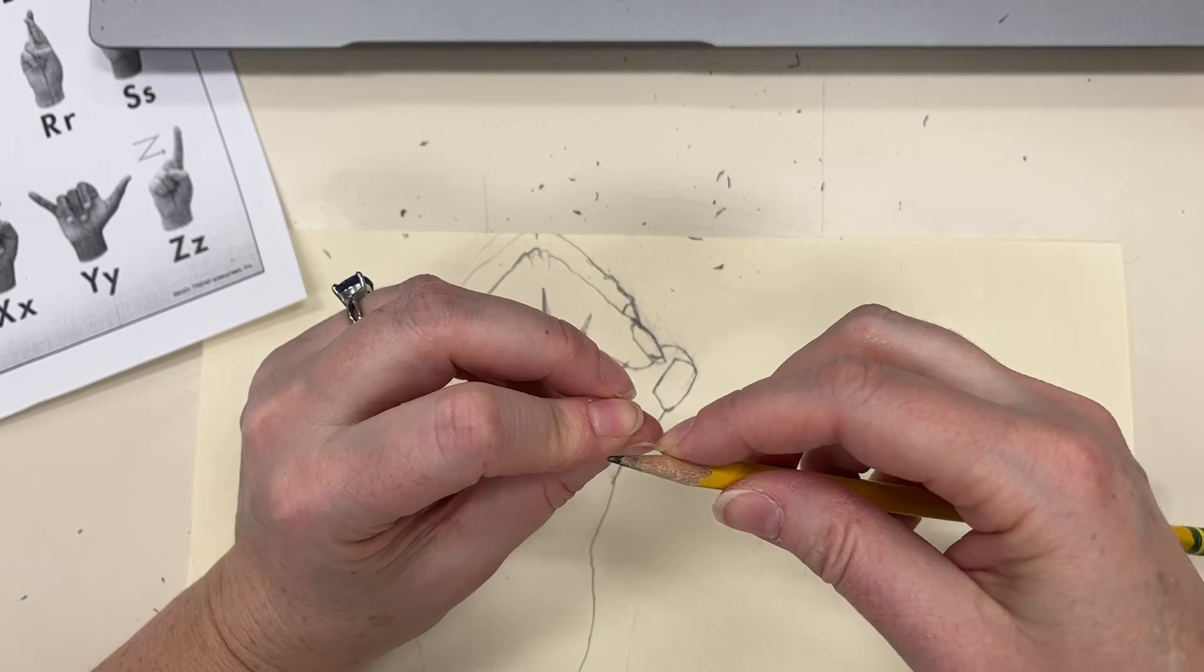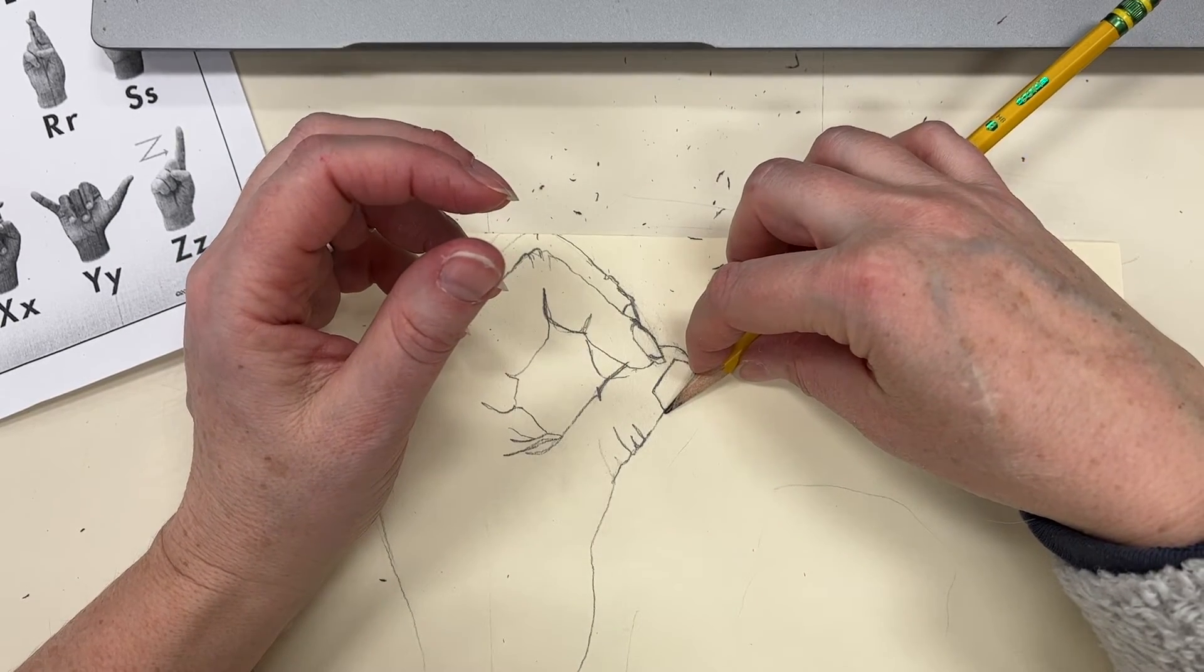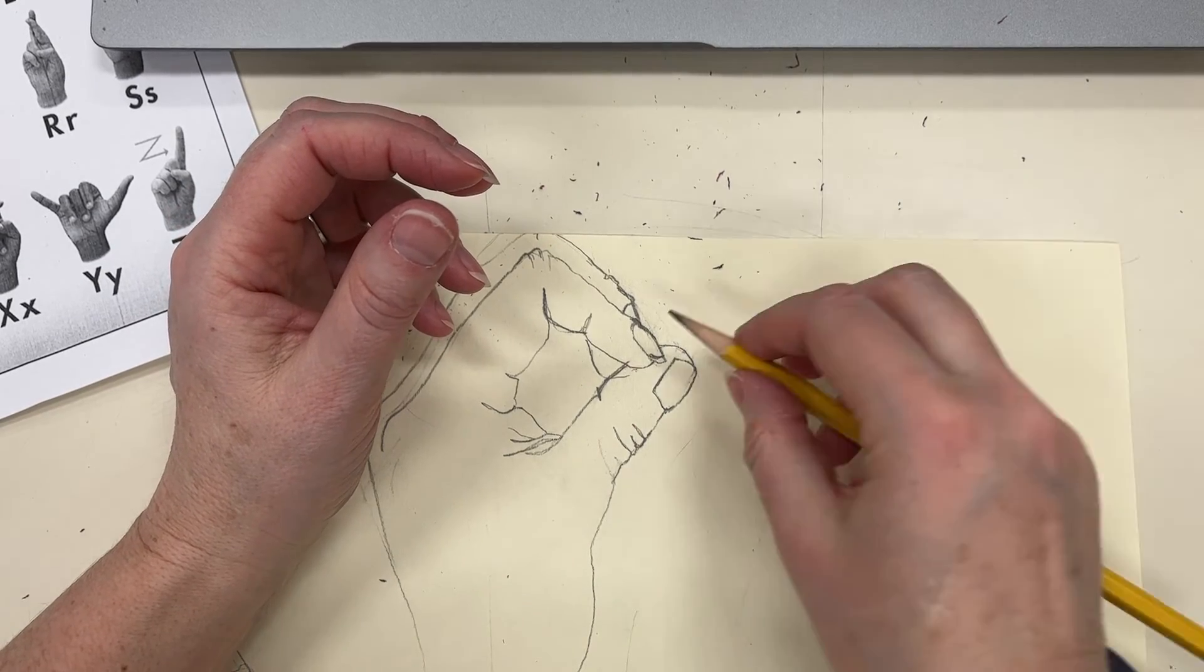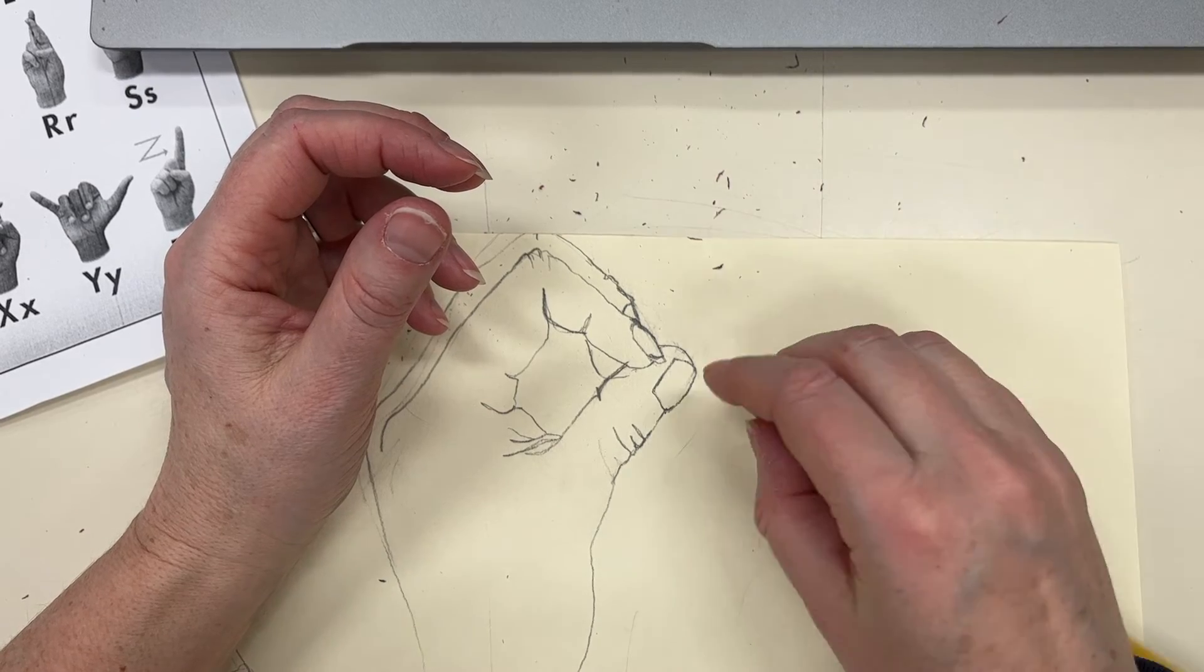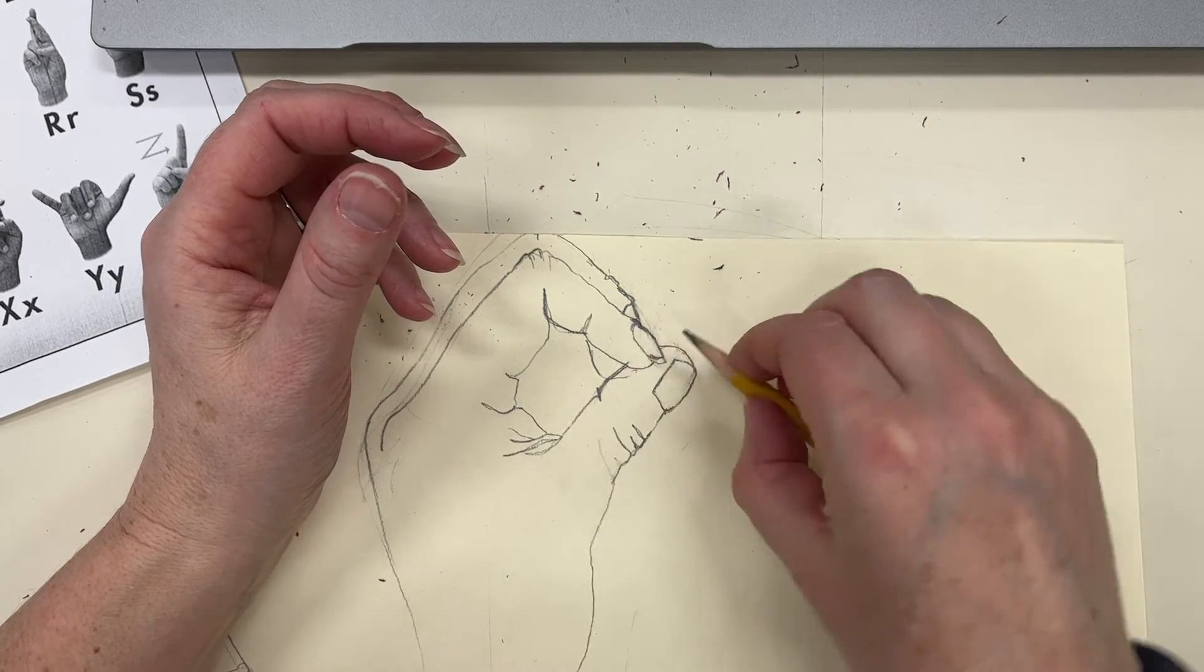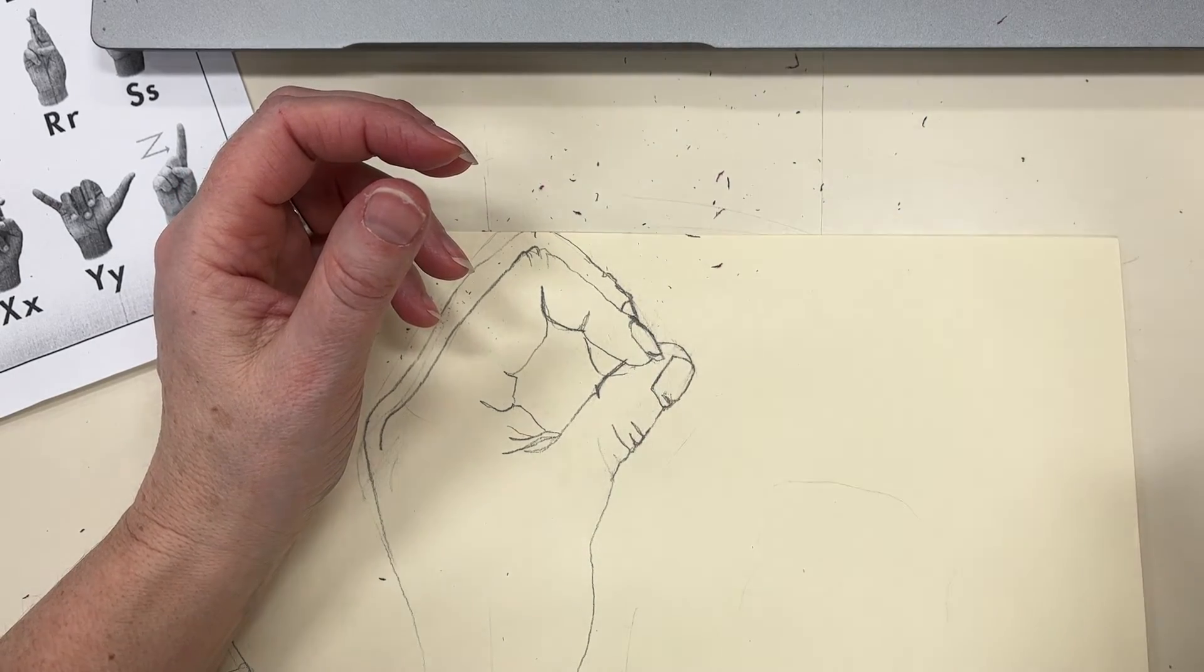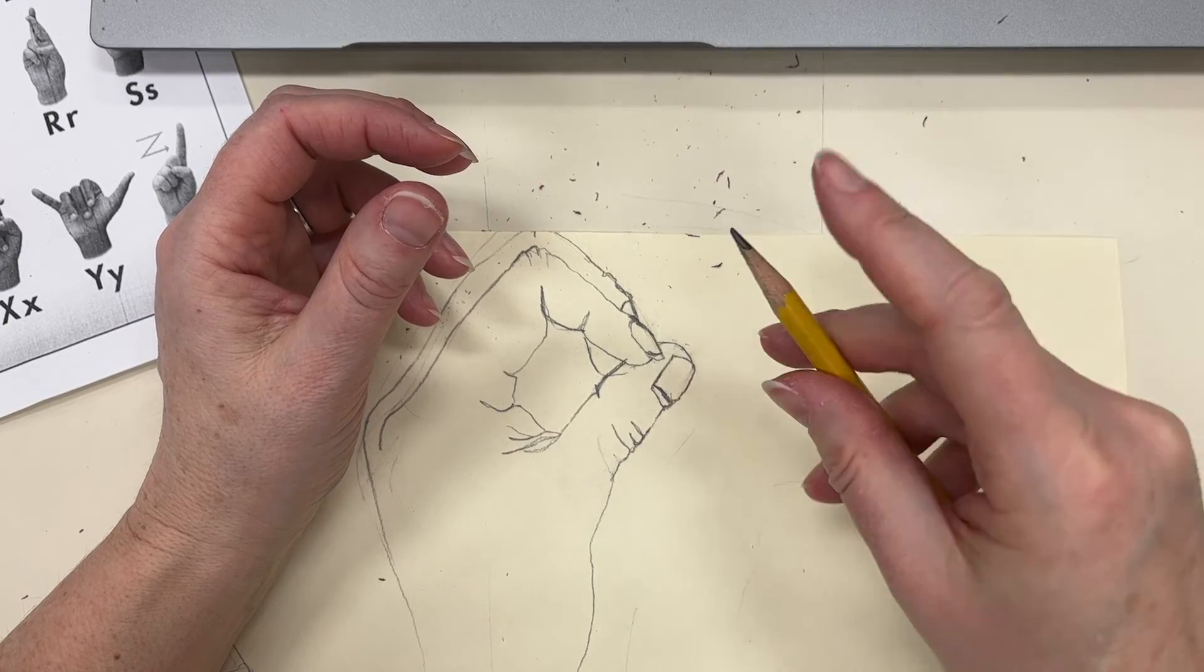Another trick is the measuring trick. If I measure my thumbnail to see how large it is compared to everything else, I'm going to realize it's the same width or length. Right now I've made my thumbnail too large because it should be the same as this finger, and I can measure it with my pencil. Taking the measurement from this finger and putting it here, I realize my nail should be done here.